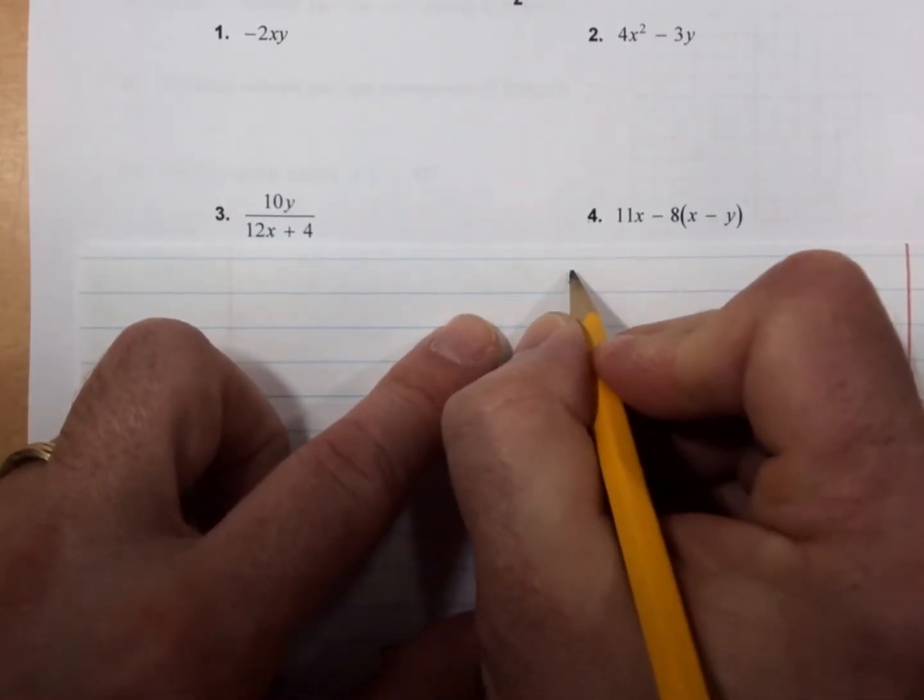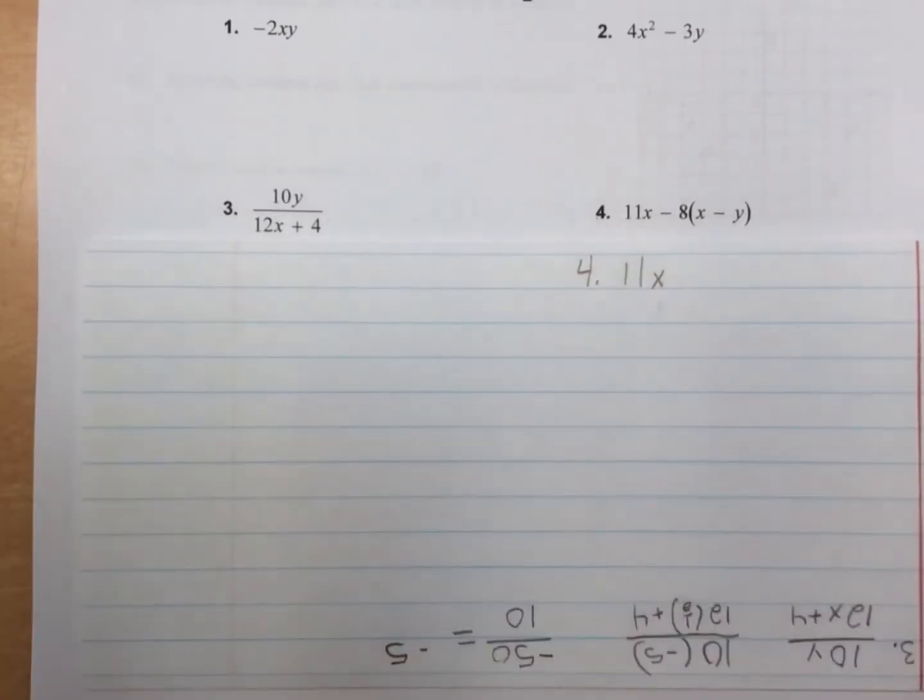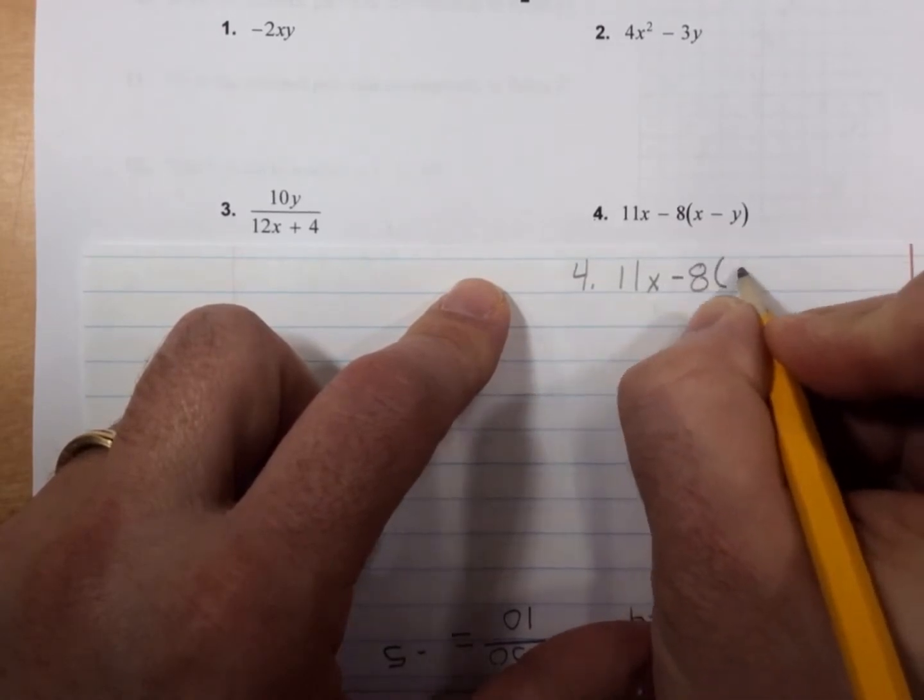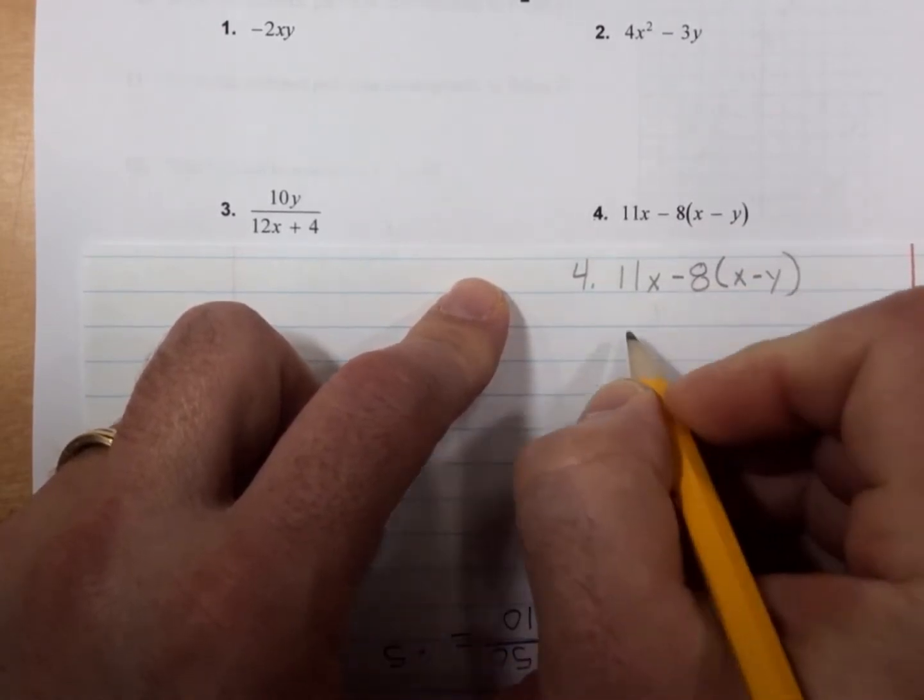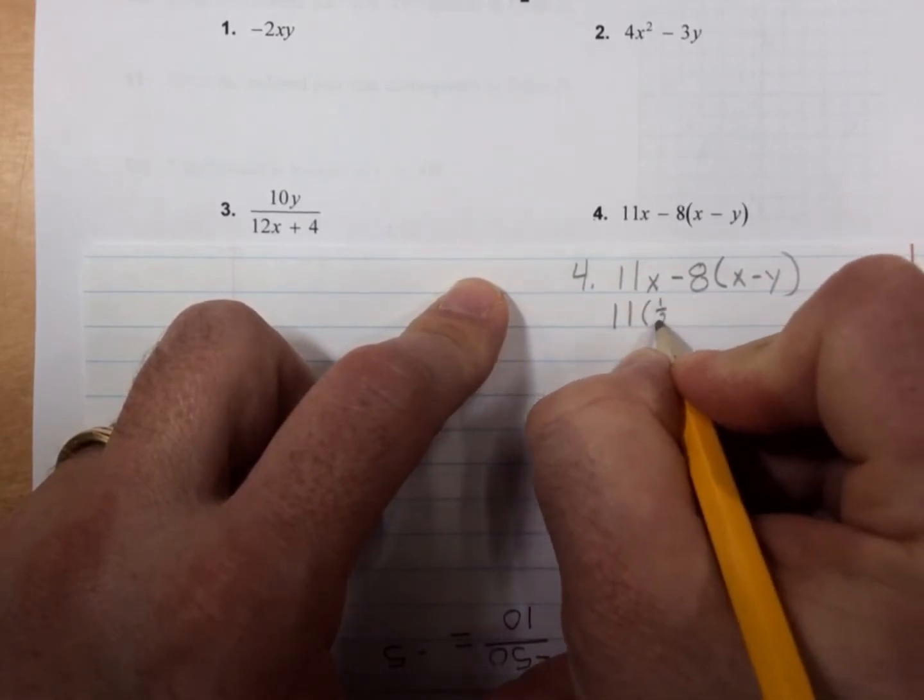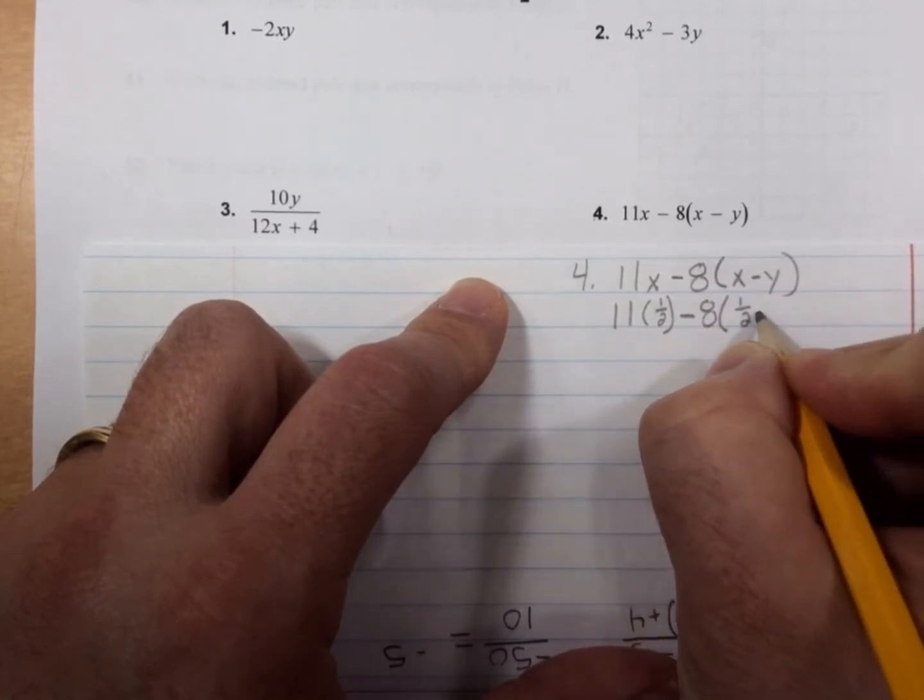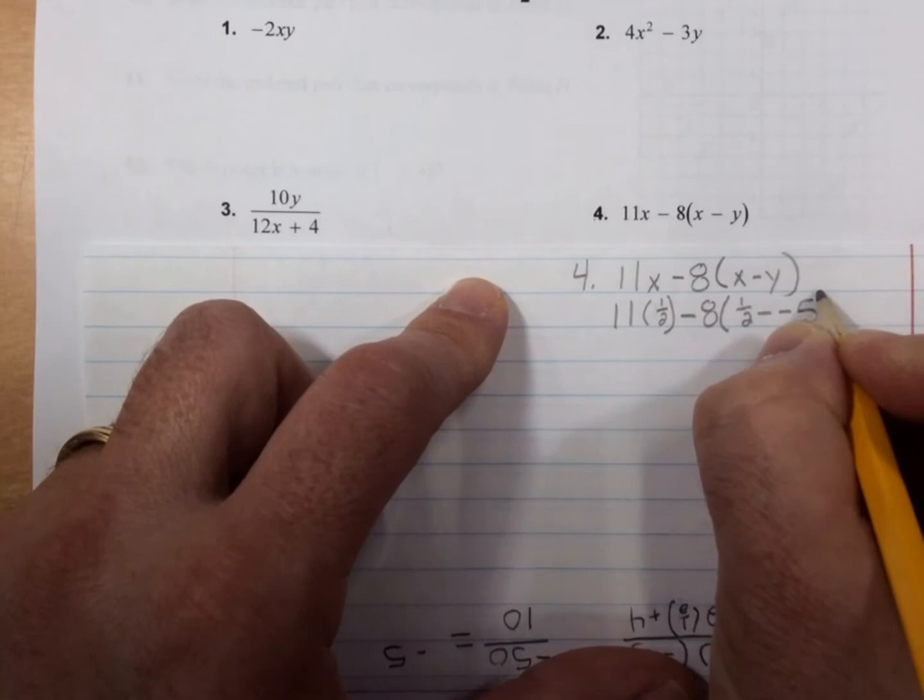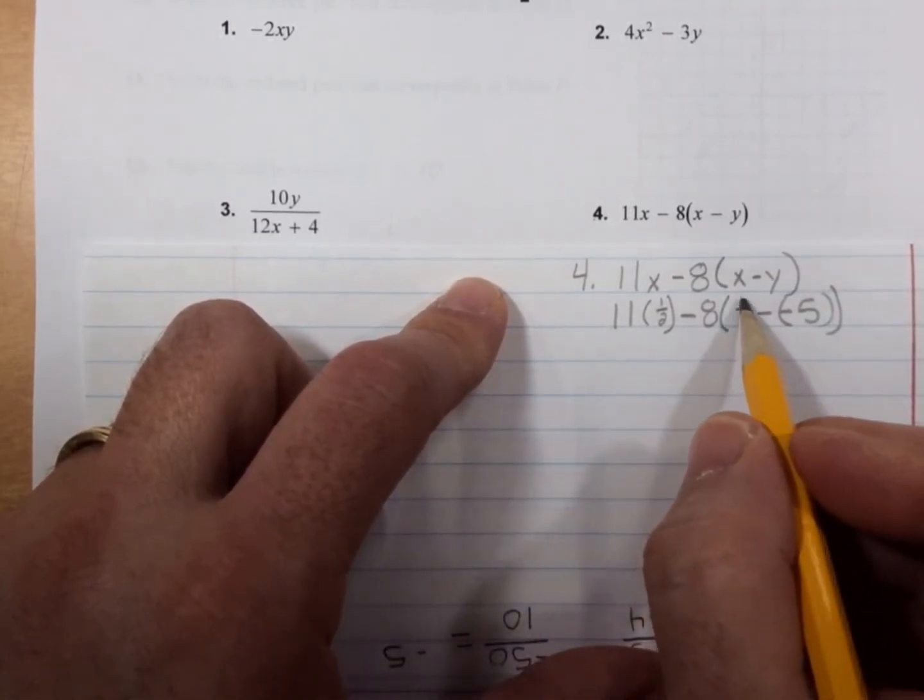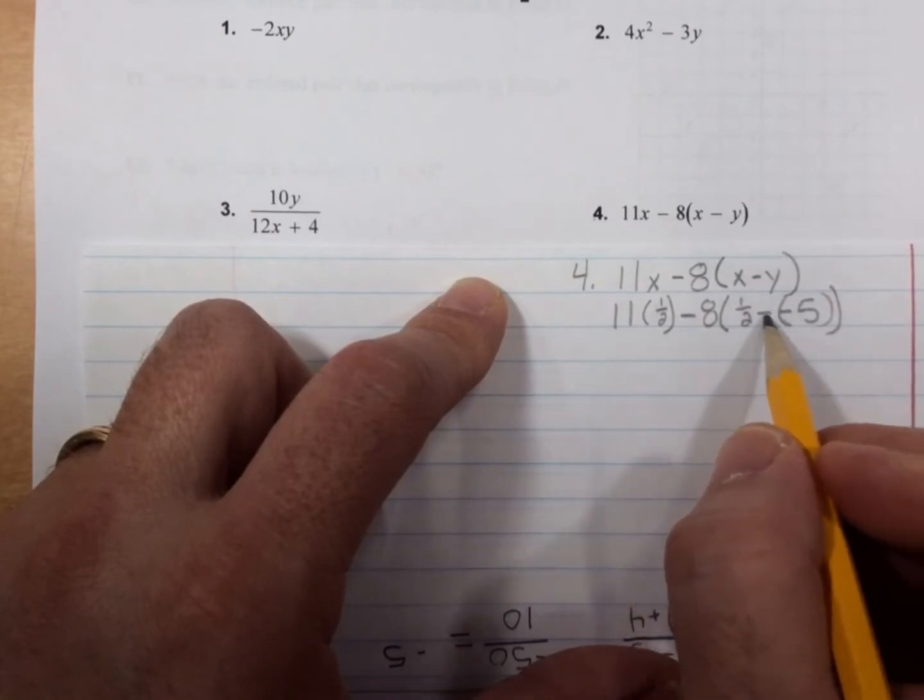Number 4. 11x minus 8(x - y). 11 times 1/2 minus 8 times (1/2 minus a -5). Parentheses first. 1/2 minus a -5 is the same as 1/2 plus 5, which is 5 and a half.